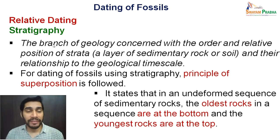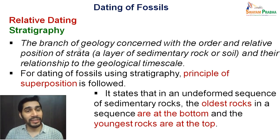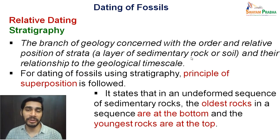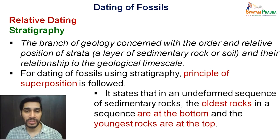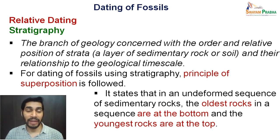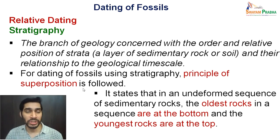Moving to relative dating methods, the first example is stratigraphy. Stratigraphy is the branch of geology concerned with the order and relative position of strata. Strata are basically layers of sedimentary rock or soil — each layer is termed a stratum. Stratigraphy can be used to date fossils, and for that there is a principle called the principle of superposition.